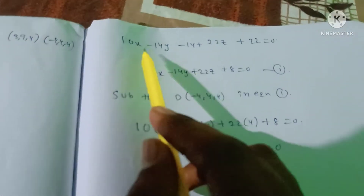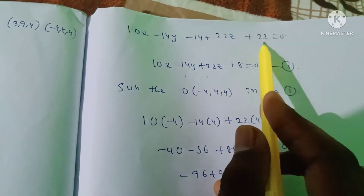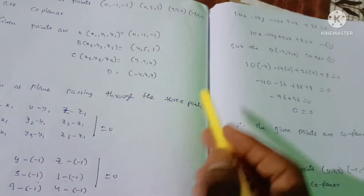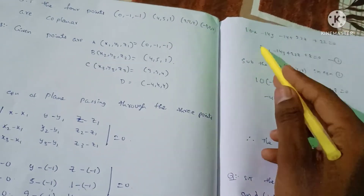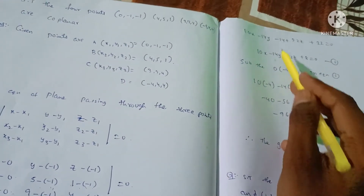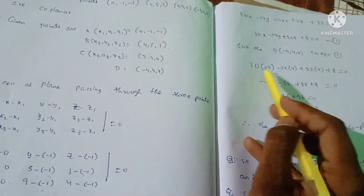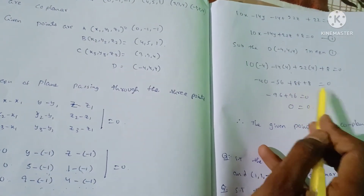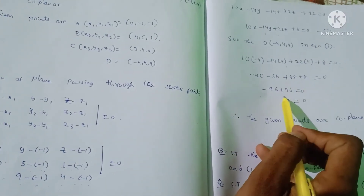Expanding: 10x minus 14y plus 22z. Then minus 4 times 4 = 8. So 10x minus 14y plus 22z plus 8 equals 0. Simplifying: minus 40 minus 56 equals minus 96, and plus 8 plus 8 = 96 equals 0. The terms cancel out, giving 0 = 0. Therefore, the given points are coplanar.